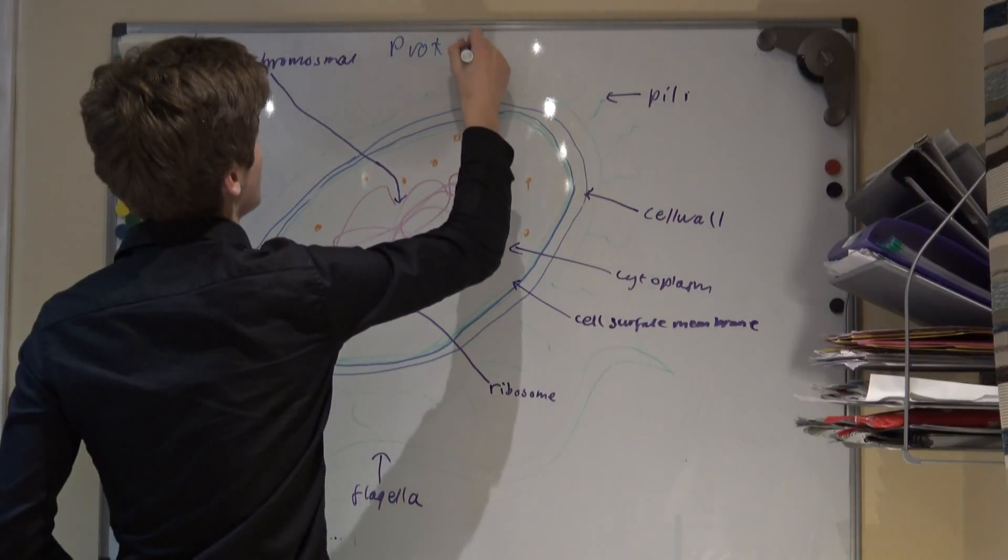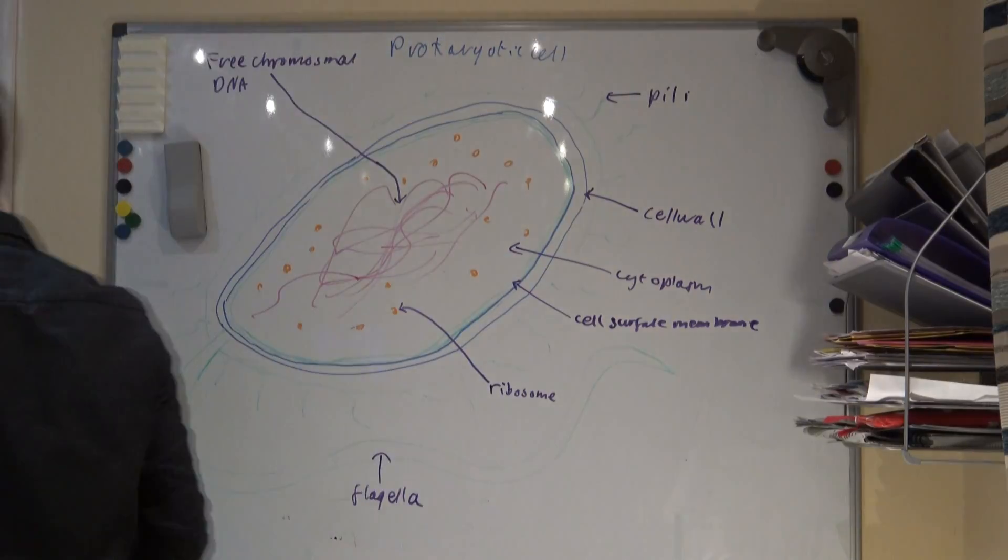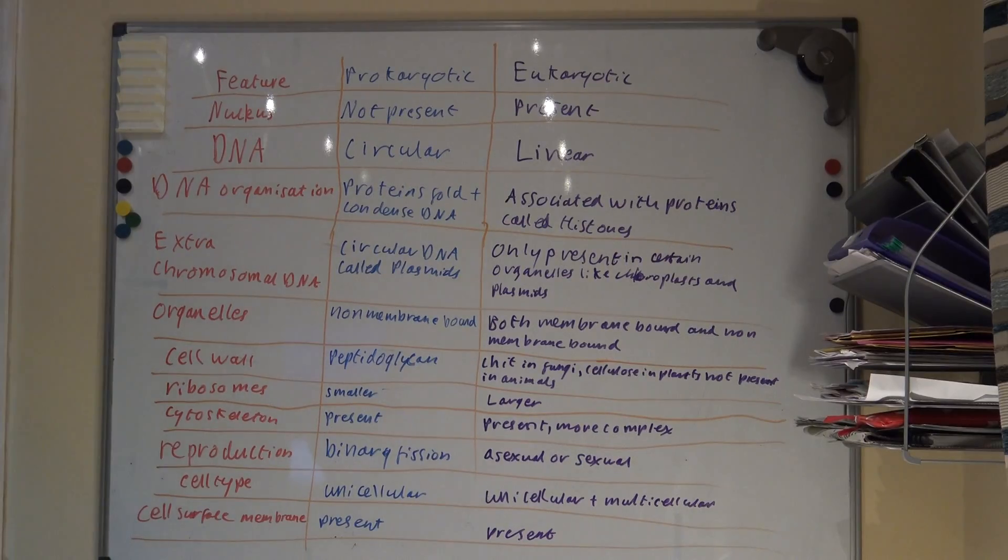The final difference I will tell you about is that the flagella of prokaryotes is thinner than the equivalent on eukaryotic cells. Please see the table on screen to remind you of all the differences.